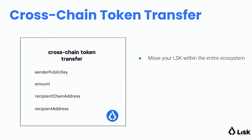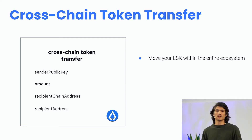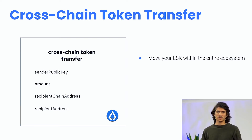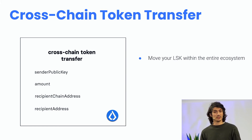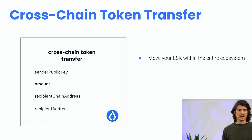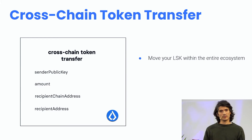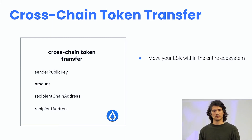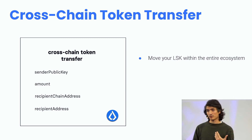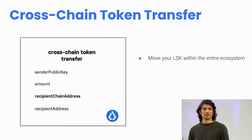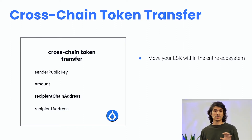As part of LISC interoperability, we're specifying two new transactions. The first one is the cross-chain token transfer. Among other properties shared by other transactions, such as the sender public key, we have the amount, the recipient chain address, and the recipient address. As with a normal balance transfer, the amount allows a user to specify how many LISC they want to move, and the recipient address specifies the target address that will receive the funds. We also see a new property: the recipient chain address, which specifies the target chain where the funds will be moved to.